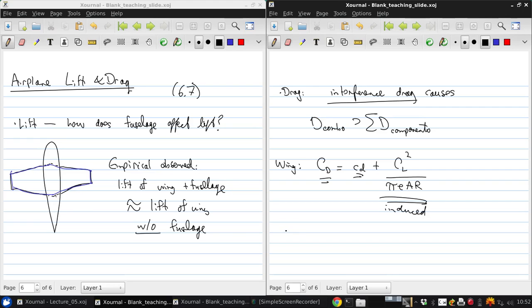If we want to rewrite this for a whole airplane, we could write that CD is CDE plus CL squared over pi e AR. And now, this drag coefficient is the total drag coefficient for the airplane. And this CDE is a parasite drag or parasitic drag coefficient for the whole airplane. And then we still have our induced drag term from the wing.